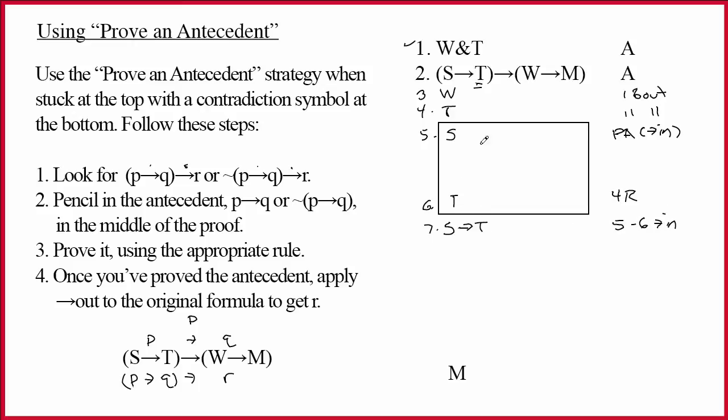Well, I know why I did that. It's so I could do the arrow out and get W arrow M by two seven arrow out. And now, I'm done with the proof already. This becomes nine by three eight arrow out. Three comma eight arrow out.